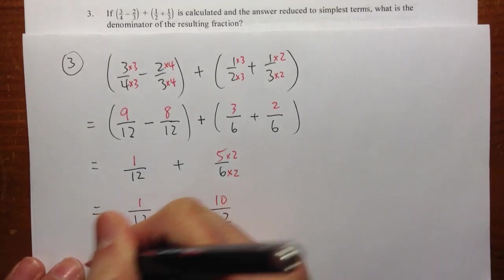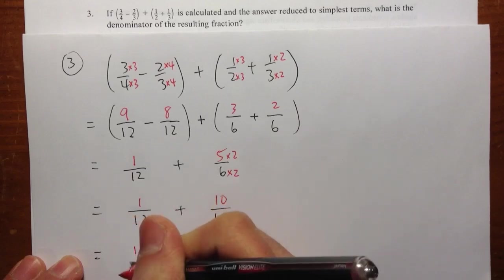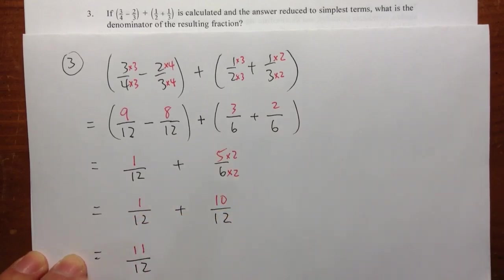When we add, again, at the top, 1 plus 10 is 11. So it's 11, the denominator doesn't change. 11 over 12.